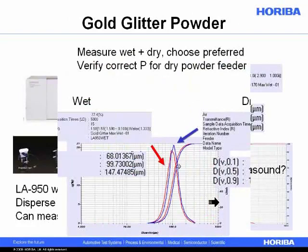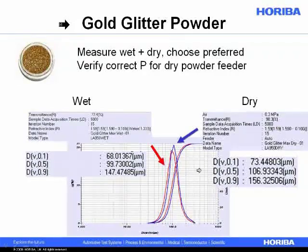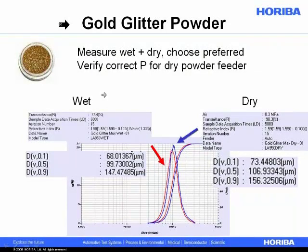To add some glitter, we decided to add some gold glitter powder, which is most often a coated mica. The particle size is up in the range of 100 microns, and we could measure that wet or dry. In this case, we measured it both ways.